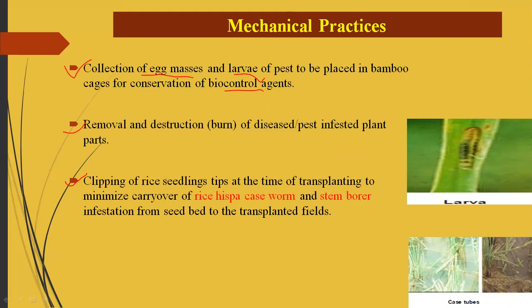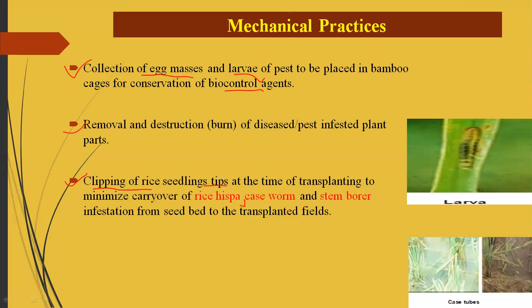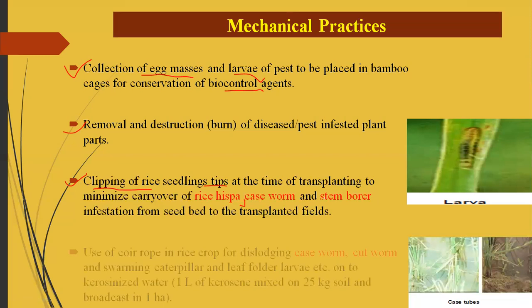During transplanting, clipping of rice seedlings is recommended to minimize carrying of rice hispa, caseworm, and stem borer from nursery to main field. If seedlings in the nursery bed are affected with egg masses at the tip, there is a chance of further infestation in the main field. Clipping removes these egg masses and controls the next pest population.